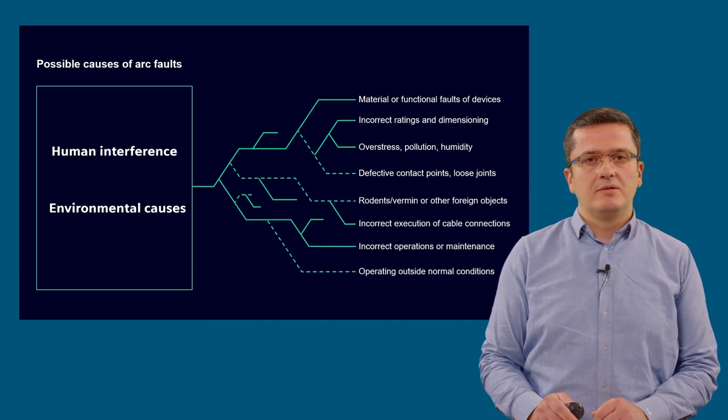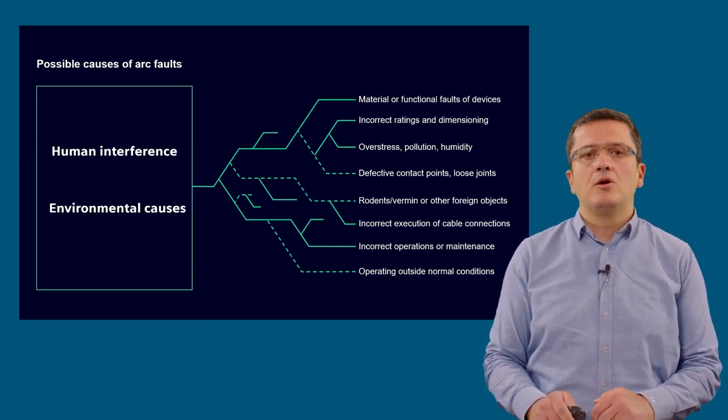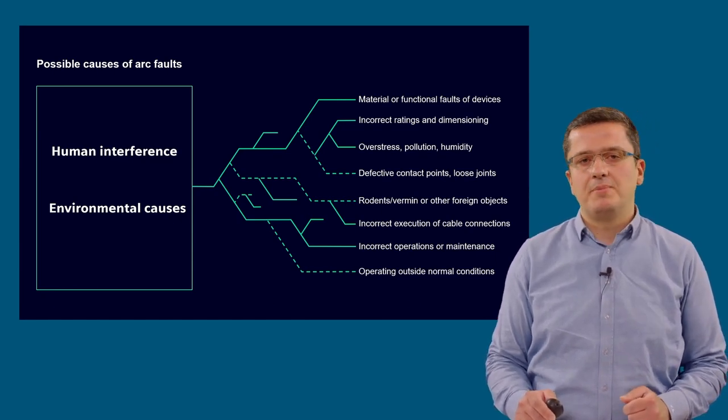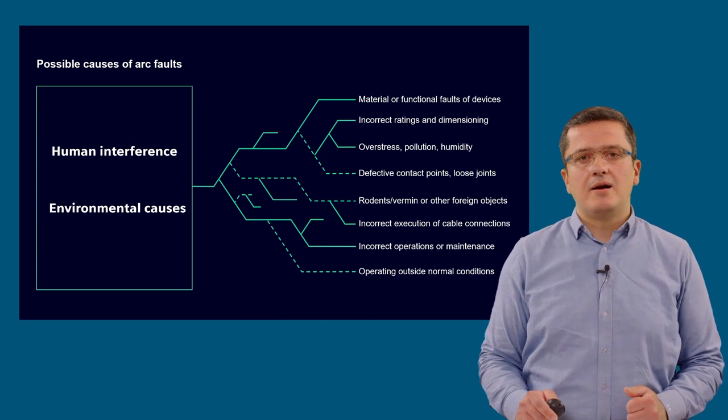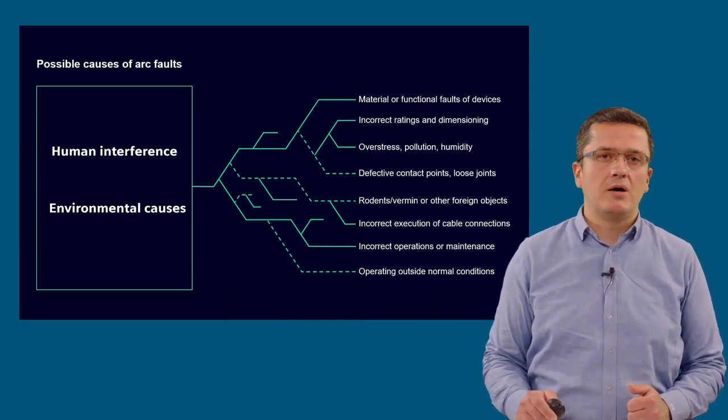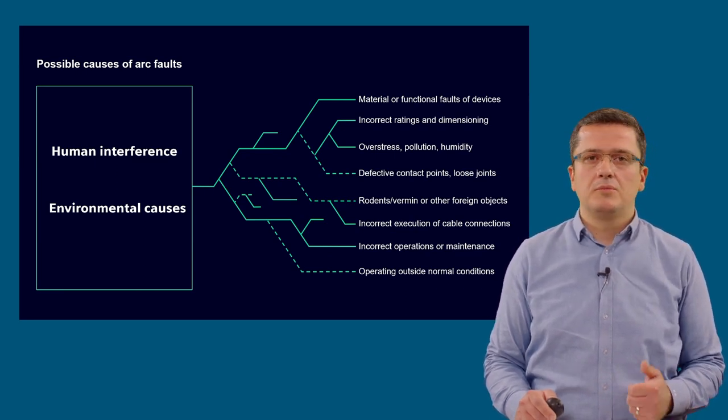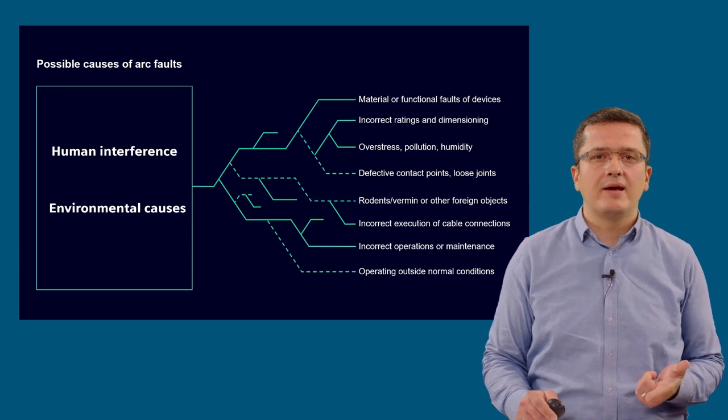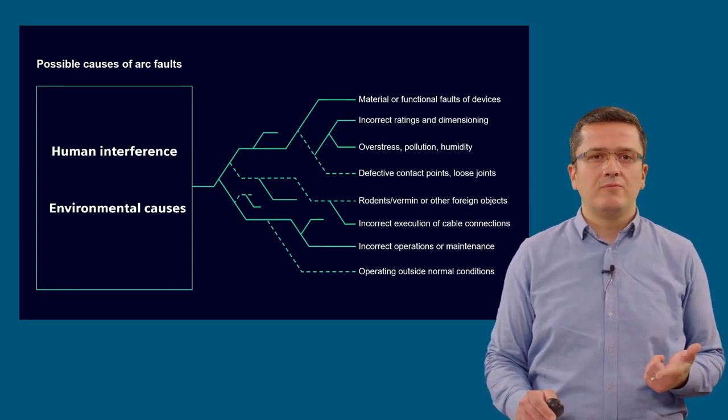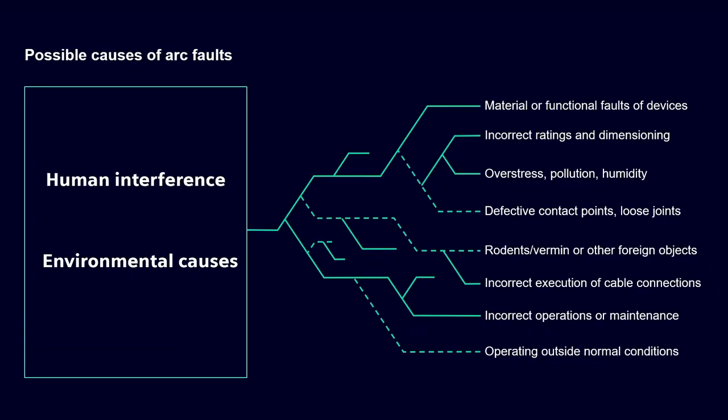The occurrence of an internal arc in a well-designed, type-tested, correctly installed and operated switchgear is improbable, but not impossible. The reasons are mostly linked to human interference or environmental causes. Most repeating causes are loose connections, corrosion causing overheating and further escalating to arcing faults, rodents and vermin entering into the equipment, or deteriorating insulation in time.